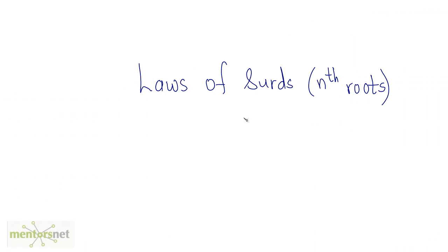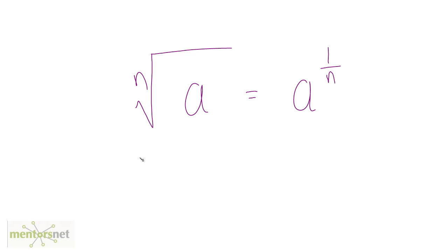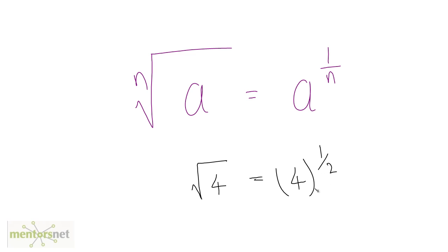In this video we are going to look at various laws of surds or laws of nth roots which will help us to simplify expressions that have nth roots. The first law: nth root of a is equals to a raised to 1 by n. So if you have square root of 4 then it is equivalent to 4 raised to 1 by 2, and you can simplify the expressions according to the laws of indices thereafter.